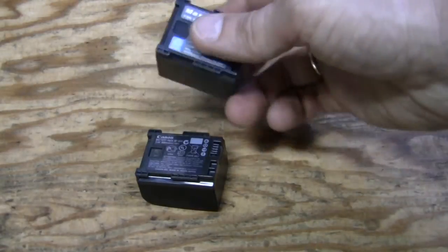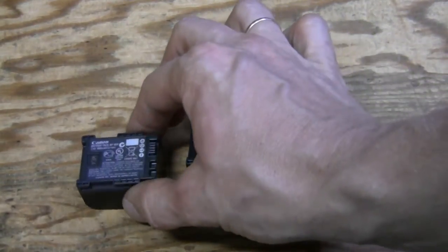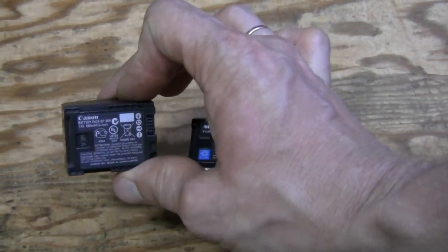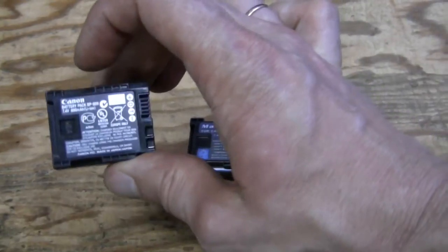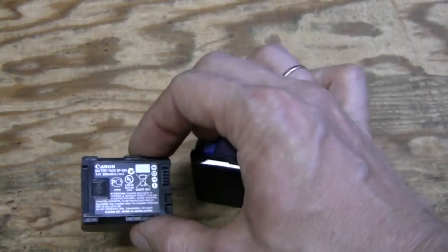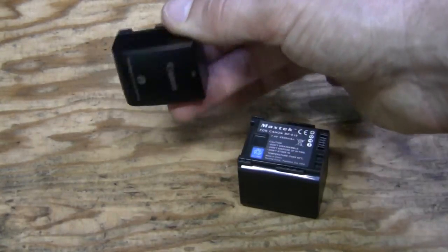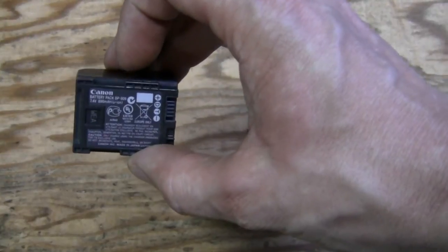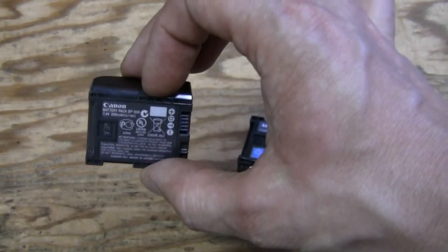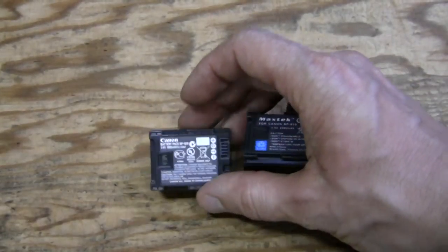But I don't think manufacturers test batteries at such high current. So they probably specify this capacity rating at much lower current. Not sure what exactly. I don't have the specs. And I suggest to go lower to 500 mA. So that should be good enough for our purposes here.